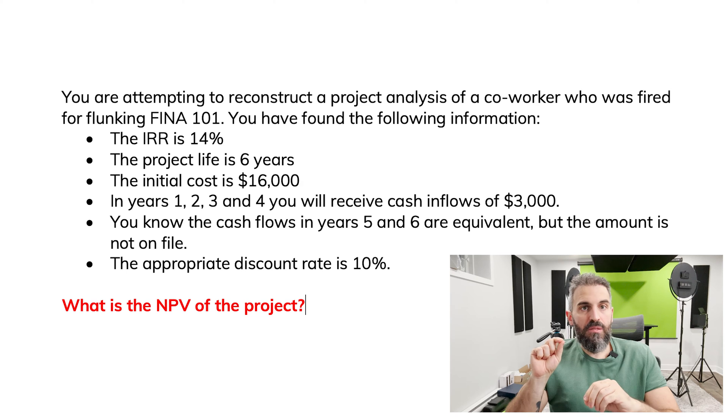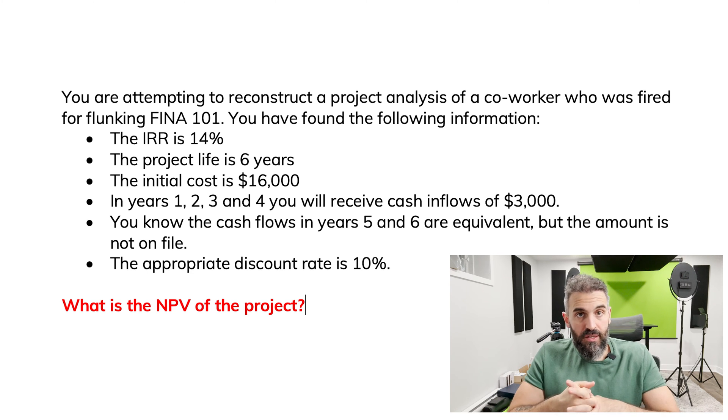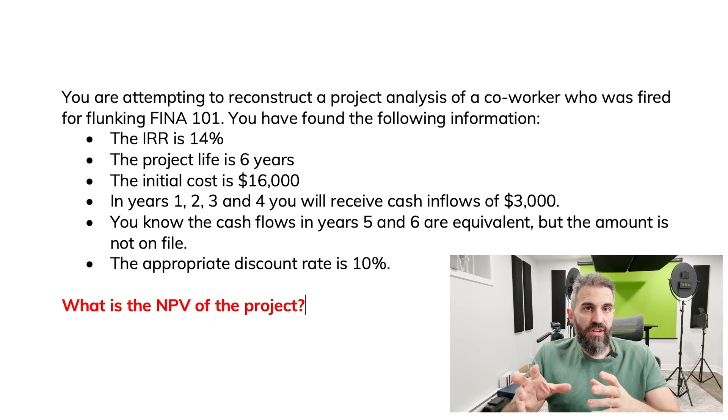But there are some key elements missing, namely the cash flows in years five and six, which are unknown. You're told that in the first three years you have $3,000 per year in cash flows, but you don't know those last two. So it's up to us to figure out what they are so that we can use that information to find the net present value.